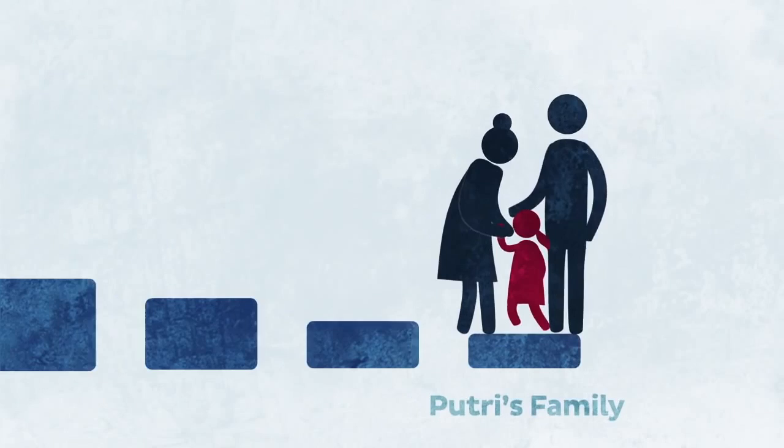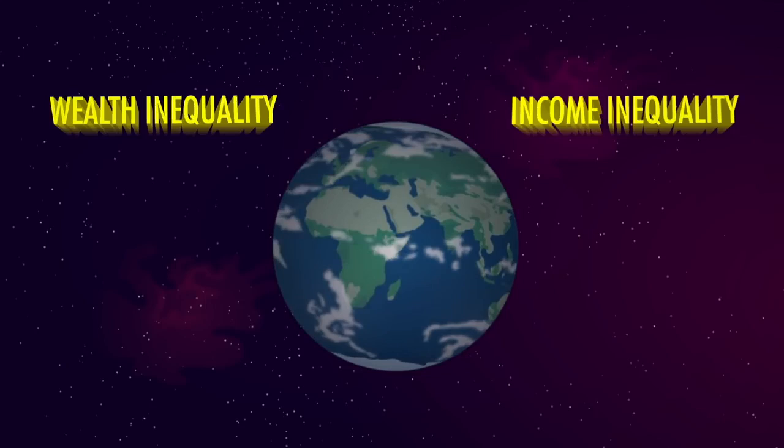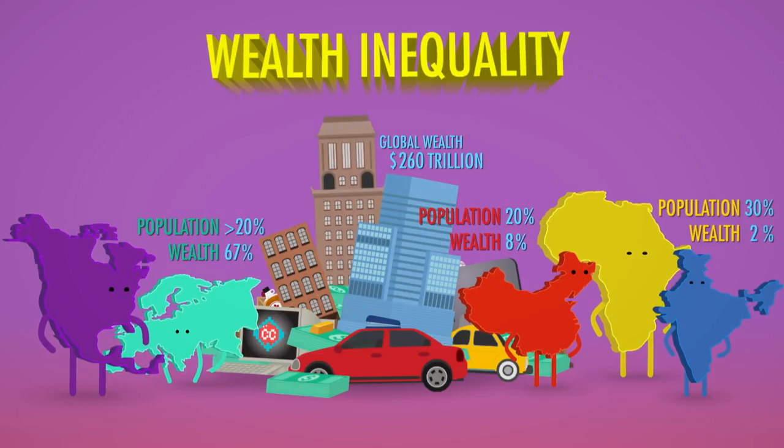How unequal is the world right now? There are two types of inequality: wealth inequality and income inequality. In terms of wealth inequality, although India and Africa conform 30% of the world's population, they only possess about 2% of the world's wealth.